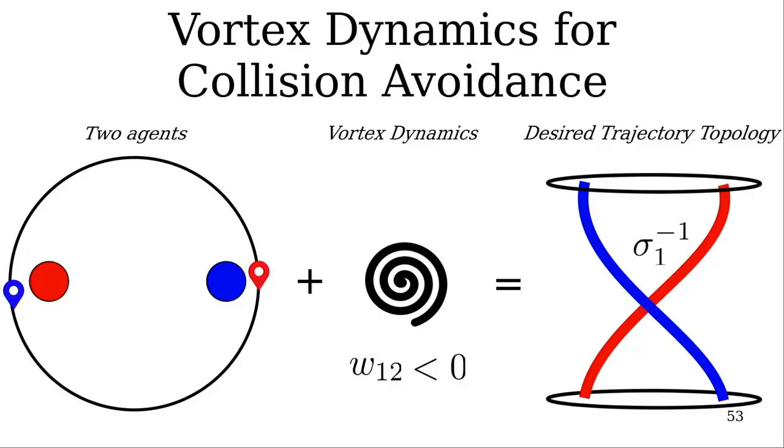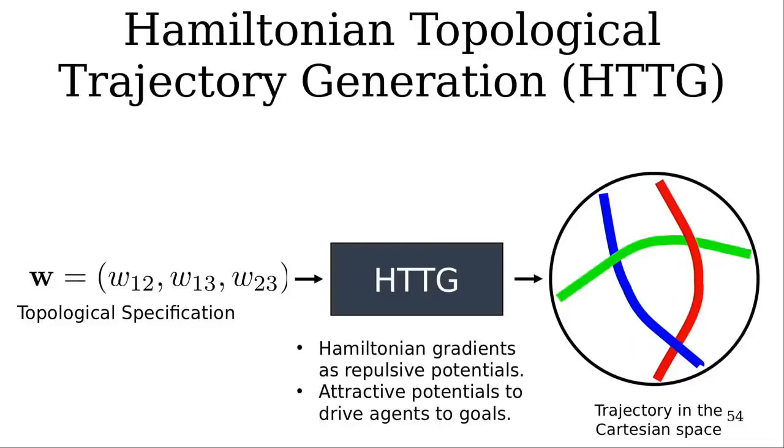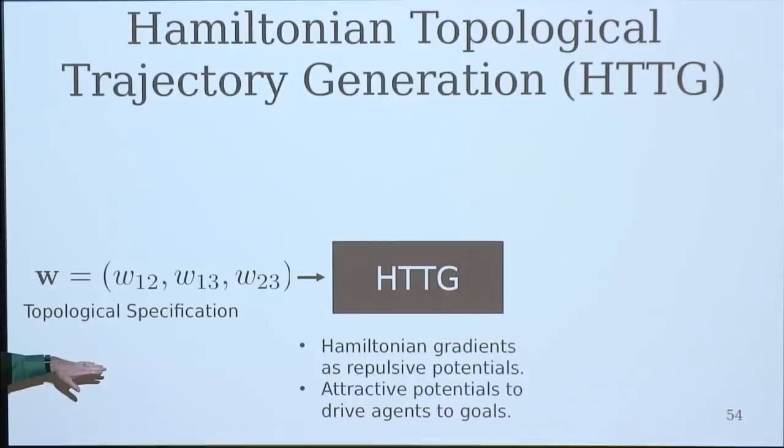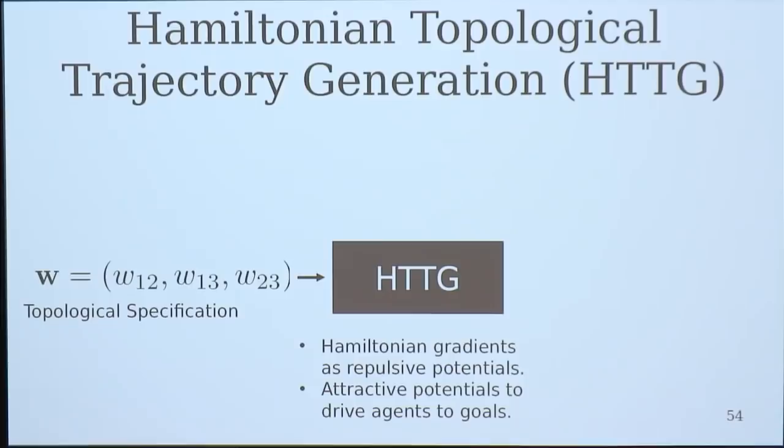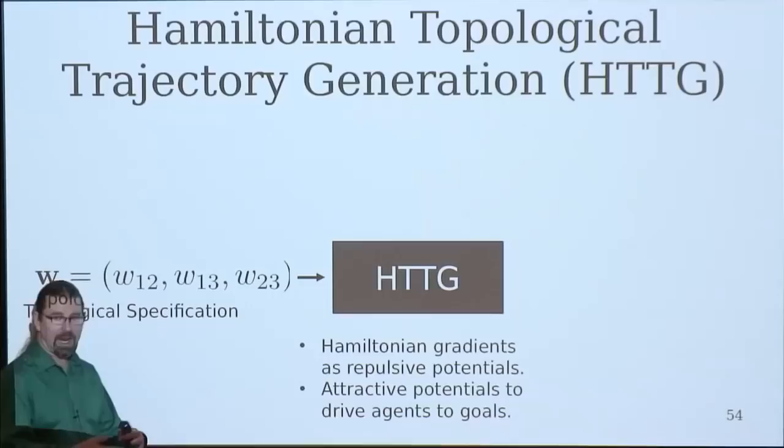We had a negative empirical result. We were unable to do it. I can't say it's impossible. But when you get these complicated systems with a bunch of agents moving through a space, it's very tempting for the optimizer to say, well, I'll just let these two pass on the wrong side. Whereas with this system, it naturally works because that's the natural dynamics of the system. And so what we do, we have the topological specification as a list of pairwise winding numbers. We feed that into our trajectory generation system where the Hamiltonian gradients are repulsive potentials. They're keeping the agents from colliding with each other. Furthermore, there's attractive potentials, which are the goals. You want the agents all to move toward their goal.